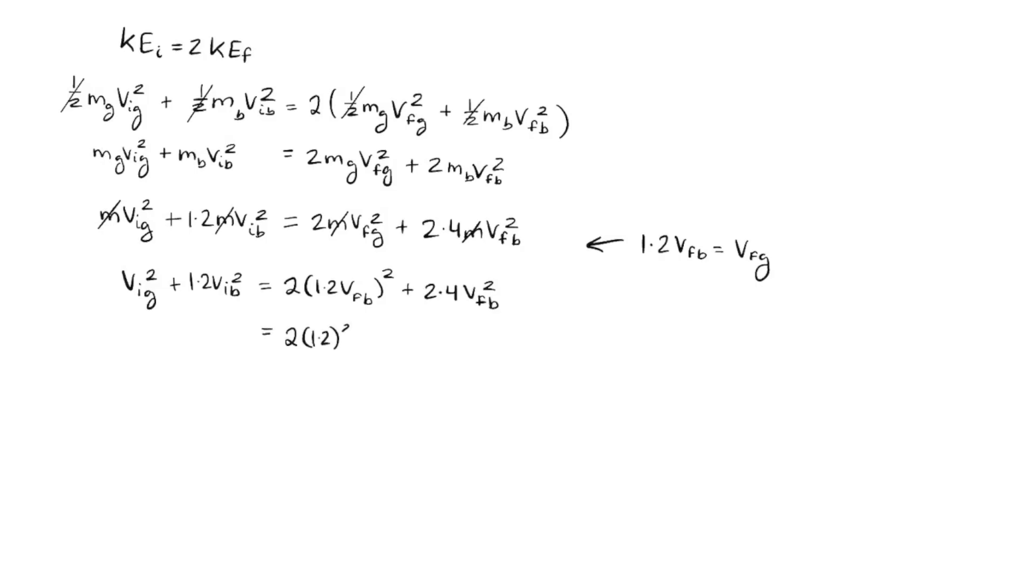So let's distribute the squared to the two terms inside the parentheses. So 2 times 1.2 squared times v final of b squared plus 2.4 v final of b squared. Now we can factor out v final of b squared and we're left with 2 times 1.2 squared plus 2.4. Now we can finally isolate v final of b squared by dividing the second half of that part over to the other side like this. And then take the square root of both sides to get rid of the squared.